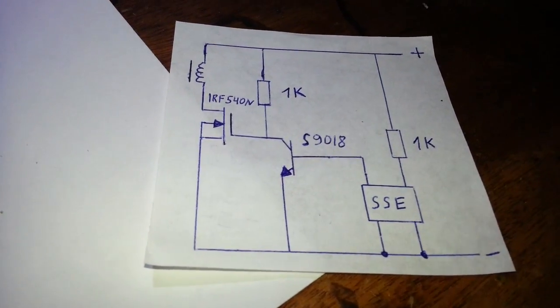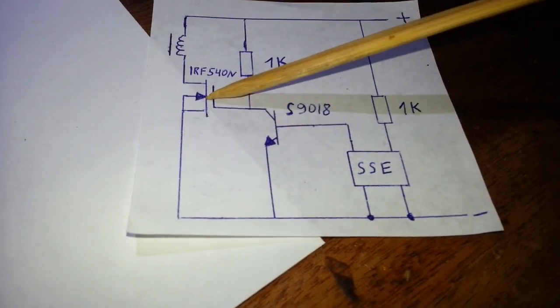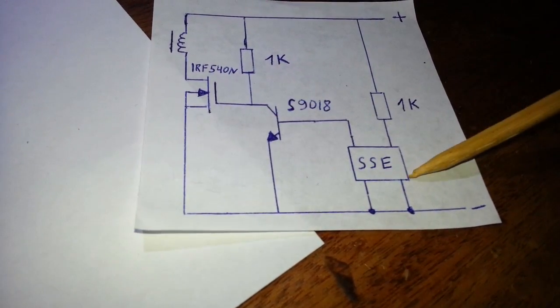The schematic of this device is very simple. Here we have a coil, two transistors, and a hall effect sensor.